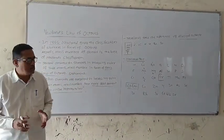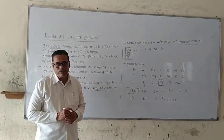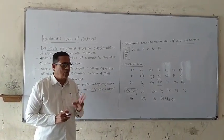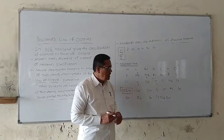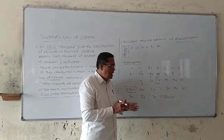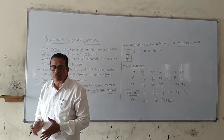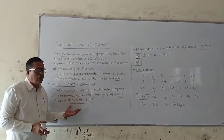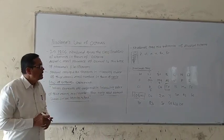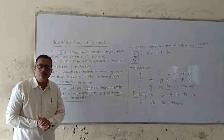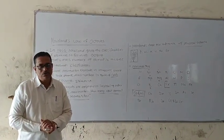Hence, Newland's classification has limitations and is not considered a fully successful classification. There are two main drawbacks: first, after calcium every eighth element does not show similar properties to the first; second, Newland placed two elements at the same position with different properties. This is Newland's Law of Octaves — an important law, as atomic mass number is the base of Newland's classification. Newland was the second scientist to give a classification of elements in the form of octaves.